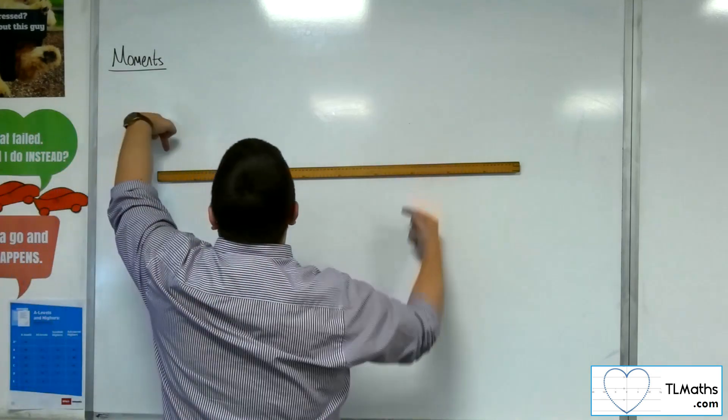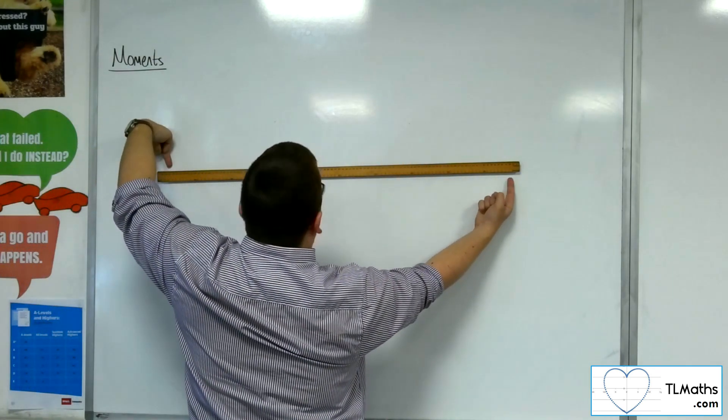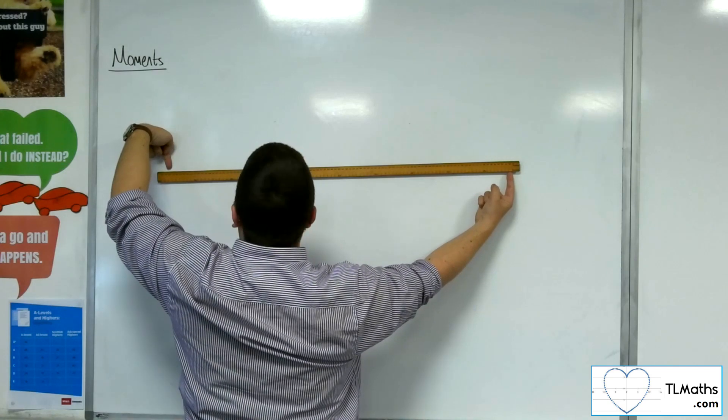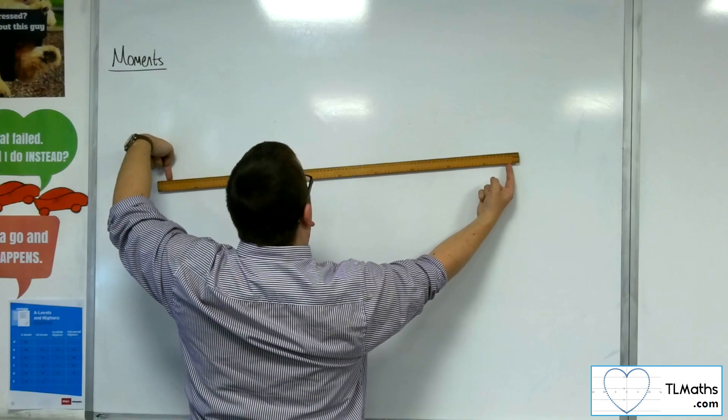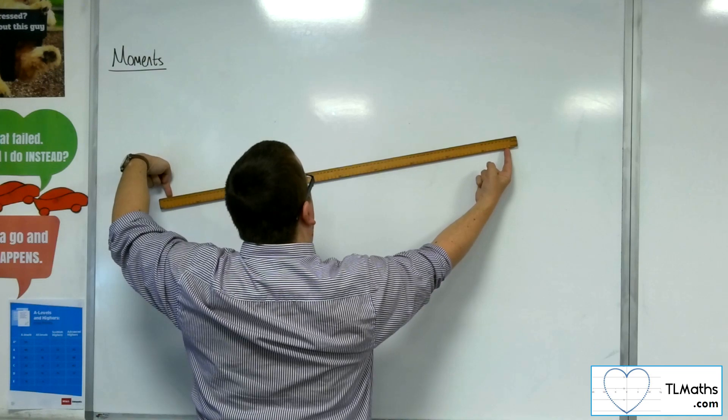If I move it so that actually I've got one force pointing down here and one force pointing up here, can you think of what's going to happen? It doesn't take much before I'm swivelling the ruler around.